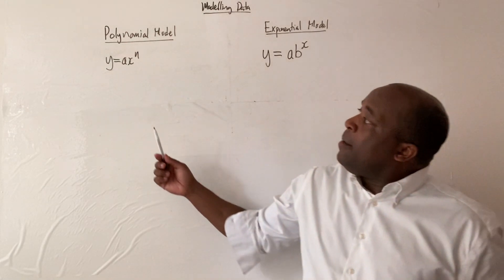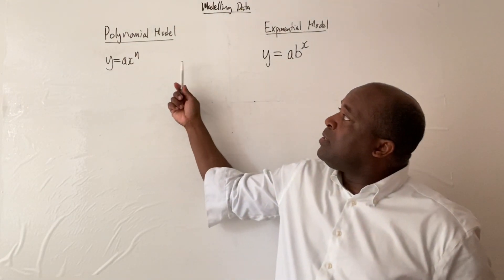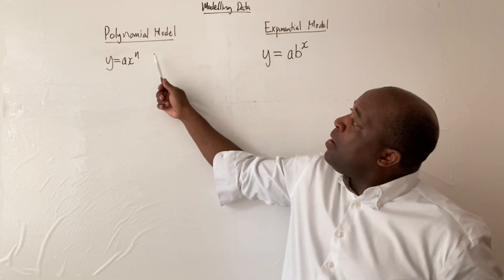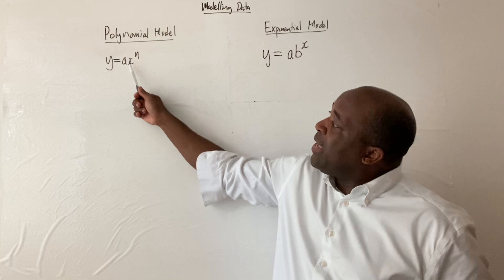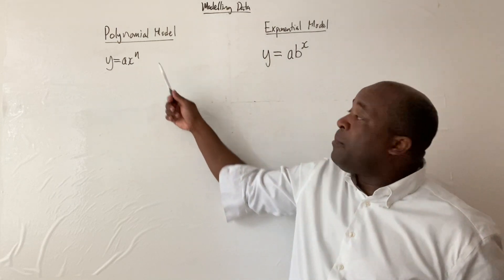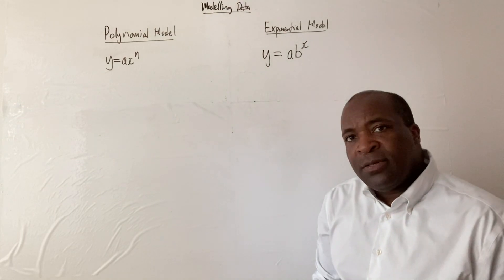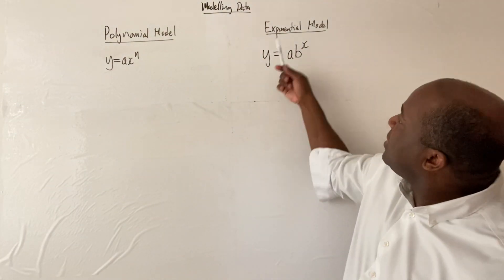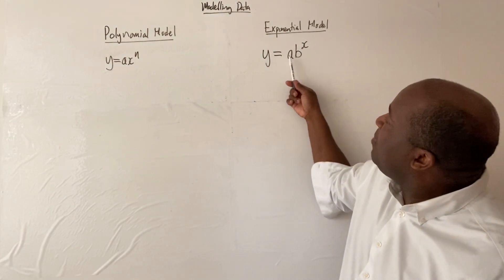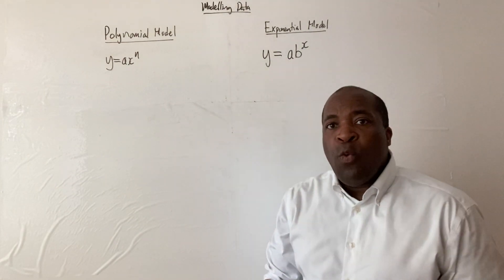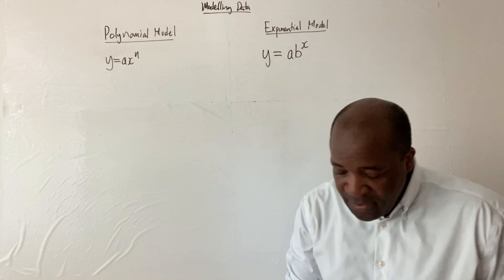This is the distinction. Here with a polynomial model, x is a variable that has been raised to a power. With the exponential model, x is the power that we're raising a and b to, so a and b would be constants that we would need to solve for. You want to be aware of the two different models.